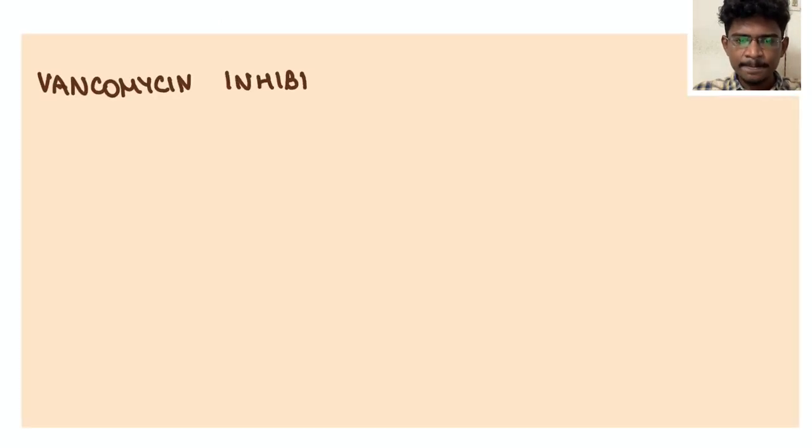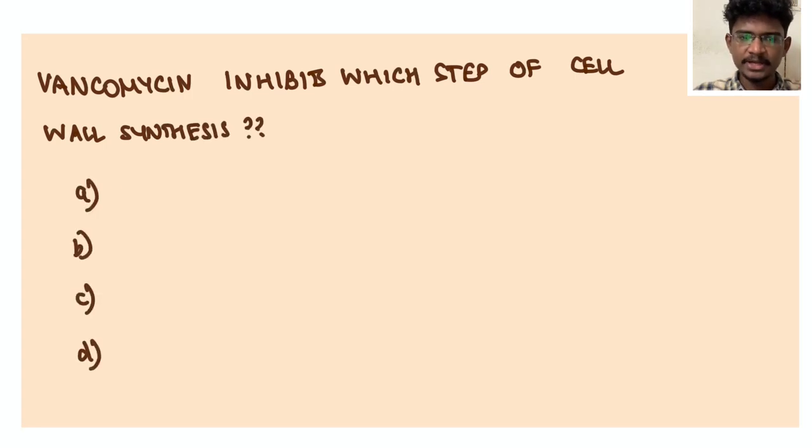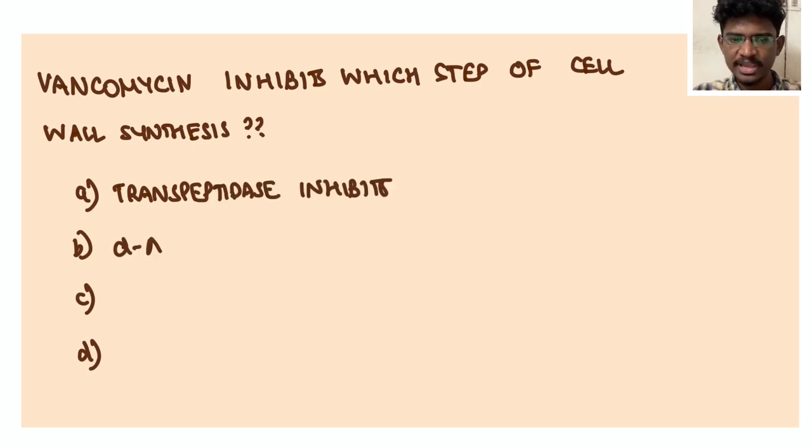Next question: Vancomycin acts by inhibiting what step of cell wall synthesis? A. Transpeptidation step, B. By binding to D-ala-D-ala, C. By inhibiting phosphoenol pyruvate synthetase. So let's see the vancomycin story.